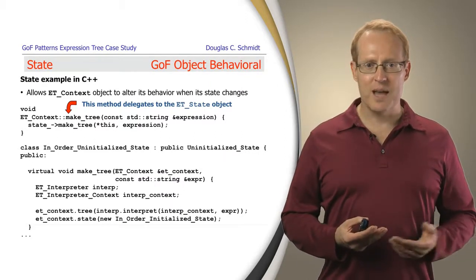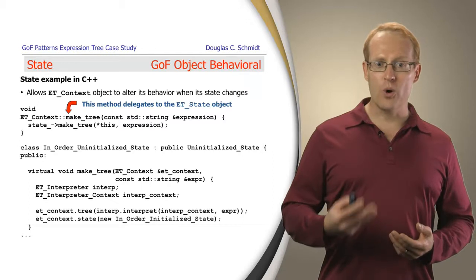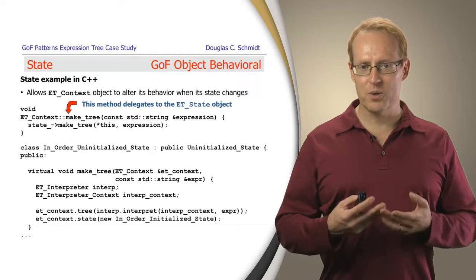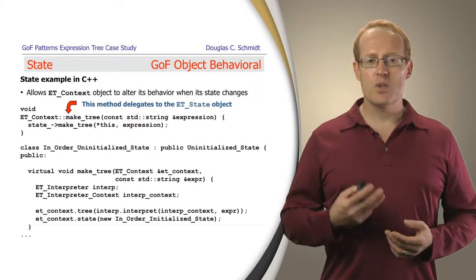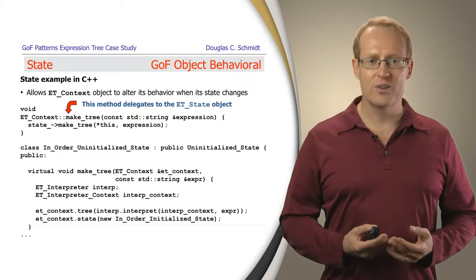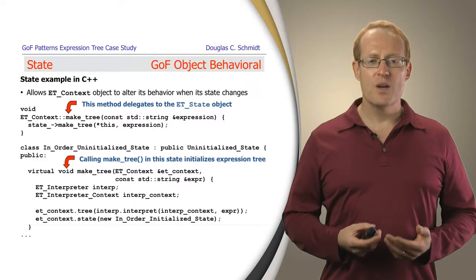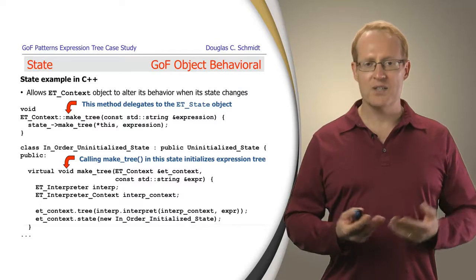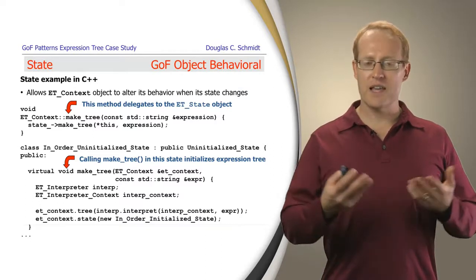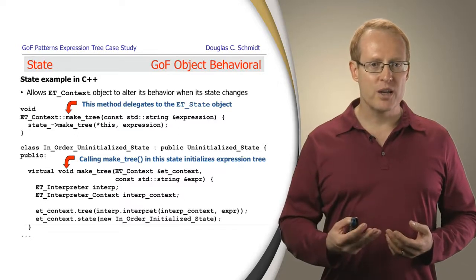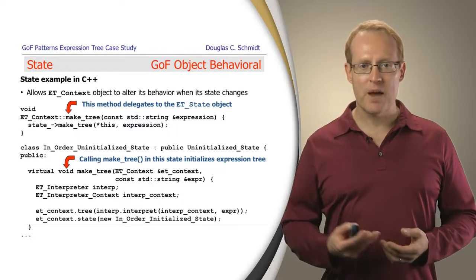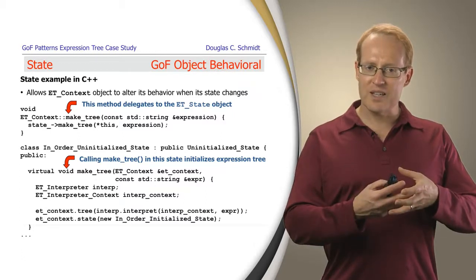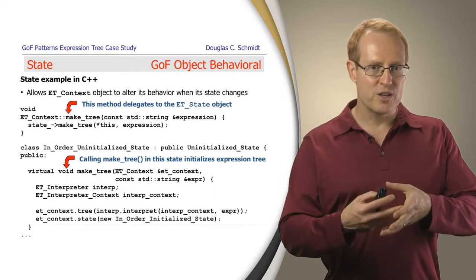Here then is the same example except now let's assume that we are in the inorder uninitialized state. We would be in this state after somebody had told us, for example, to input the input in inorder format. So we'd be in that state. Now when makeTree is called through the context something quite different is going to happen. What will happen in this context is it'll go ahead and take the expression that was passed in and then it'll use the right interpreter, in this case the inorder interpreter, to parse through that expression, build up a parse tree using the interpreter and builder pattern and then convert that into the composite pattern and then stick that together with the particular way of doing the bridge to get back an expression tree.